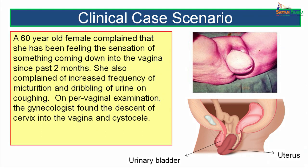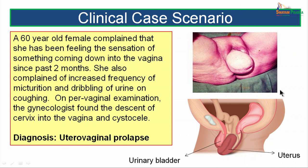A 60-year-old female complained that she has been feeling the sensation of something coming down into the vagina since the past 2 months. She also complained of increased frequency of micturition and dribbling of urine on coughing. On per-vaginal examination, the gynecologist found the descent of cervix into the vagina and also the presence of cystocele, and the diagnosis given was uterovaginal prolapse. What is seen in the schematic picture is the uterus which has descended down through the introitus and also part of the urinary bladder forming a cystocele. Let us keep this in mind so that as we go through the lecture, we will understand why these symptoms have occurred and what is the cause.